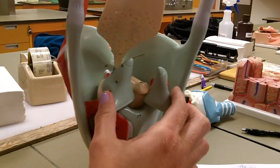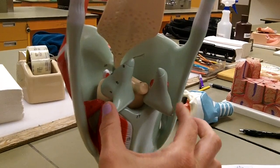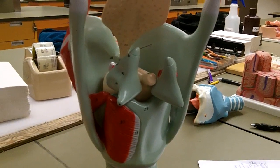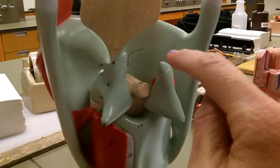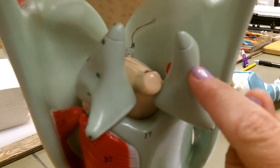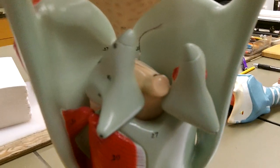Up here we are seeing the arytenoid cartilages, and on top of them the corniculate cartilage. Where is the corniculate? You see where these lines are? That reflects where the arytenoid ends and the corniculate begins.